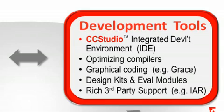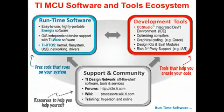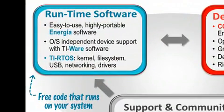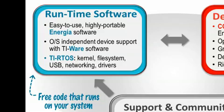To name just a few: the Optimizing C Compiler, the Grace Driver Library GUI, and the ULP Advisor — that is, Ultra Low Power Advisor. In the upper left-hand corner, we have Runtime Software. This bubble includes code that you can use to build your own programs. Best of all, these libraries ship with their source code and free of charge for TI CPUs.